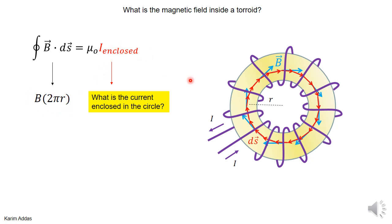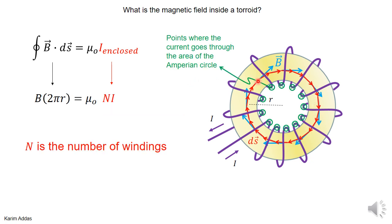Okay, what about the current enclosed? How much current is enclosed inside the circle? You can see here where the current pierces this circle, the area of the circle. The wire goes on the top, then it goes through the circle at this point, then the wire goes underneath, then it comes out outside the area. Of course we don't take the situation here because here the current is not enclosed. Then it goes above, then it goes again through the circle.